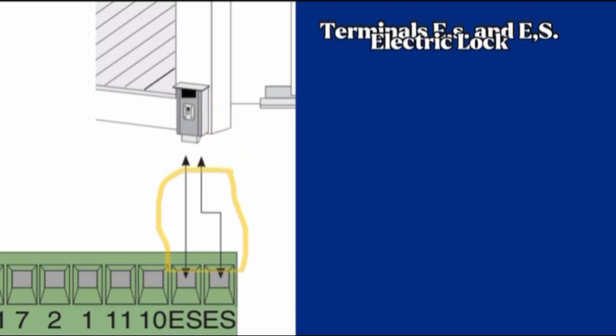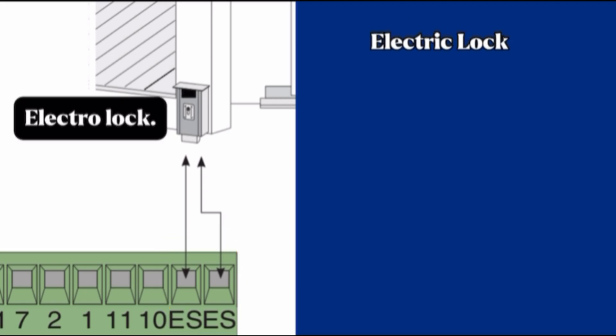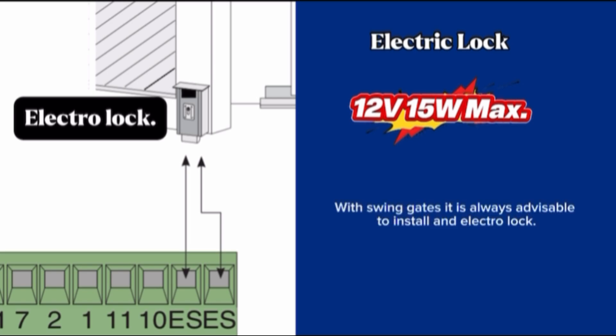Electric lock. Terminals ES and ES. Terminals for electro lock. The output is 12 volt 15 watts maximum. With swing gates it is always advisable to install an electro lock. This is to ensure a reliable closing and to protect the gear motor's inner workings.